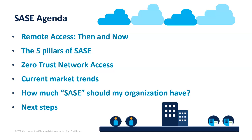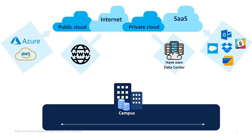Let me do some housekeeping to level-set on cloud terminology. Public cloud: Azure, AWS - everyone knows those. Private cloud: generally having your own data center, could be on-site or not. SaaS applications: things you're using from a vendor that you don't actually own. Those are the four areas where we could have remote access - public cloud, private cloud, SaaS, and internet - and even that isn't always obvious to everyone.